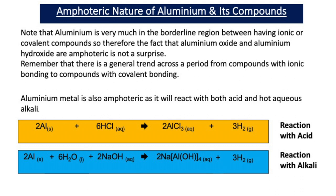Two compounds of aluminium — aluminium oxide and aluminium hydroxide — are amphoteric, meaning they react with both acids and bases. Aluminium is very much in the borderline region between having ionic or covalent compounds. If we draw a border between metals and non-metals in the periodic table, aluminium is located close to this border. Elements close to this border often exhibit amphoteric behaviour, especially with their compounds.